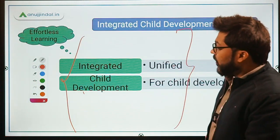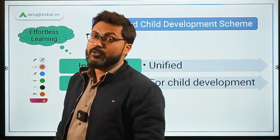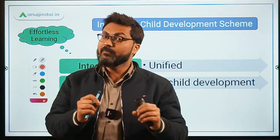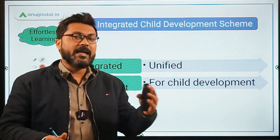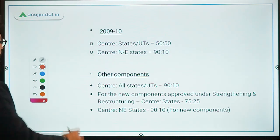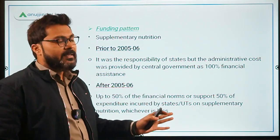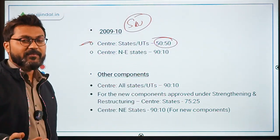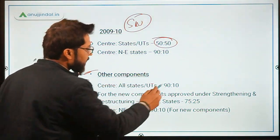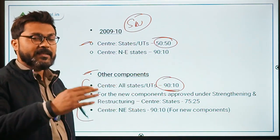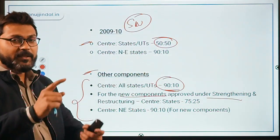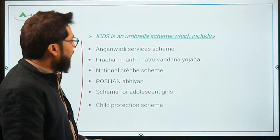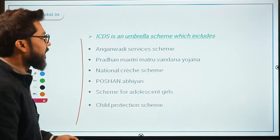Let's revise once again: Integrated Child Development Scheme was launched in 1975 to improve the nutritional and health status of children below six years of age. Eligible beneficiaries are children below 6 years, pregnant women, and lactating mothers. It is implemented by the Ministry of Women and Child Development. Current funding: supplementary nutrition is 50:50 for normal states/UTs and 90:10 for northeastern states; other components are 90:10 for all; new components under strengthening and restructuring are 75:25, with 90:10 for northeastern states.